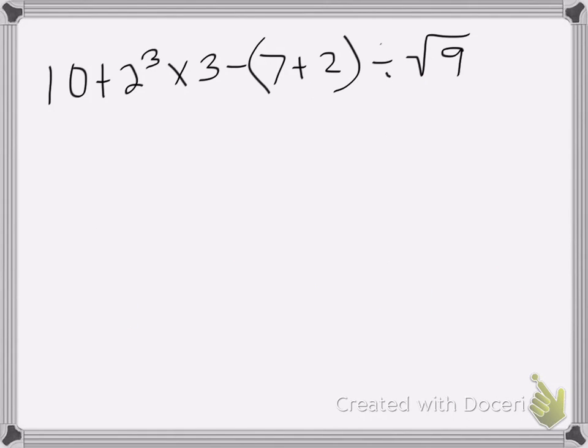So we have this problem, 10 plus two cubed times three minus seven plus two divided by nine. Again, let's take this by steps. So first we're going to do seven plus two, which is nine, and we're going to fill in the rest. Just drop it down.